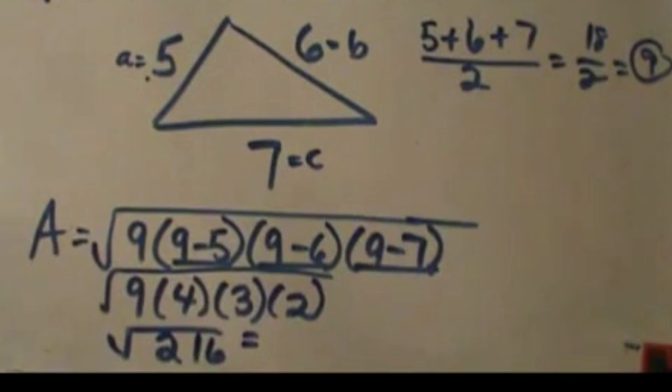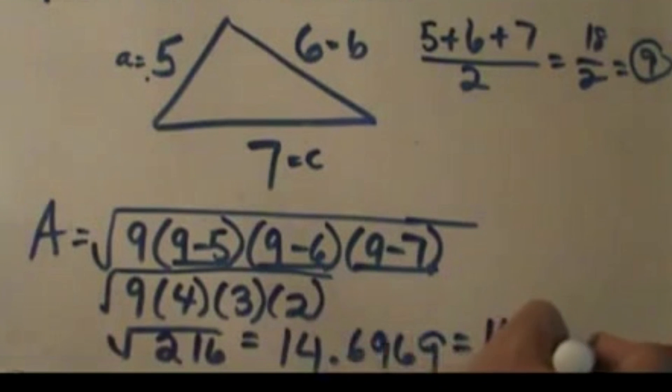So grab your handy calculator, and I've already done this. The square root of 216 is 14.6969, or you could probably just round that off to 14.7 square units.